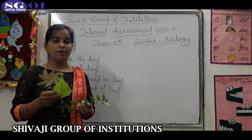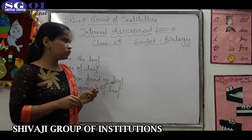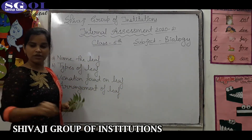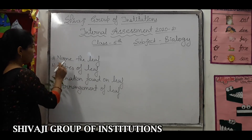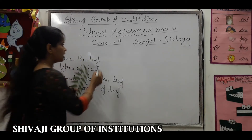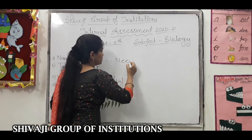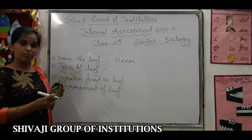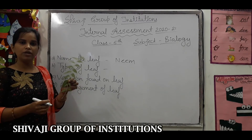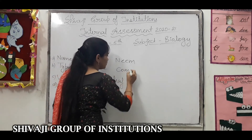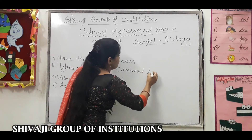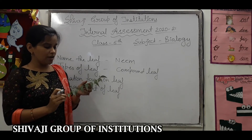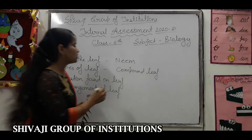After the leaves dry, what do you do next? In the drawing sheet, you will paste these leaves. After pasting, you will observe the leaf venation — that is, the Venation pattern. You can see the reticulate venation in the leaves.